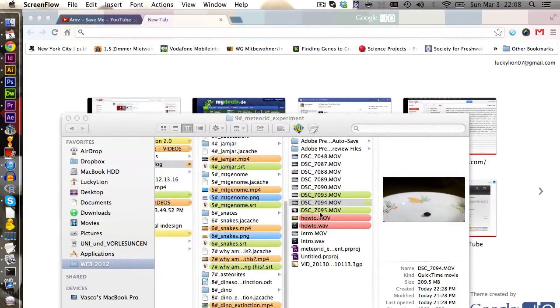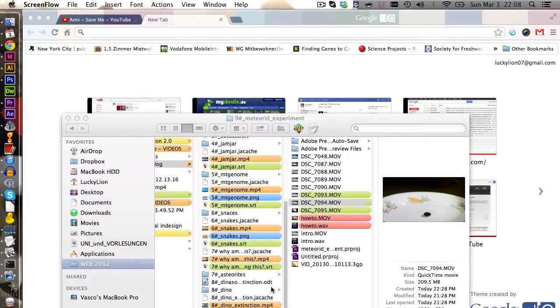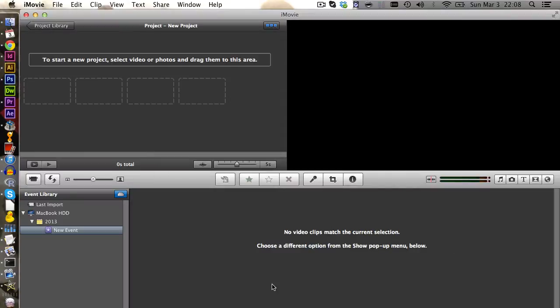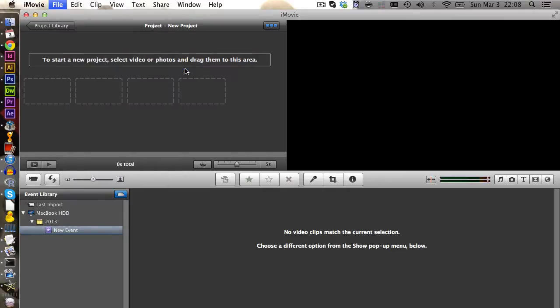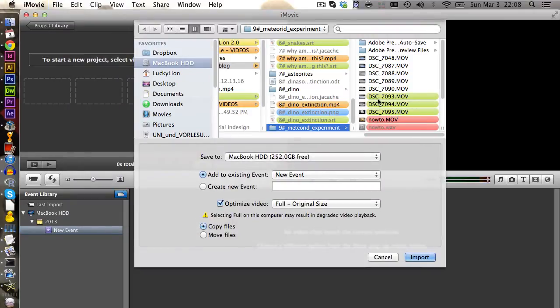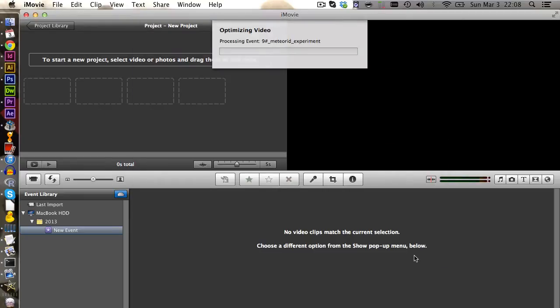Now we have imported our footage from the SD card and we can open it for example in iMovie. But this will also work the same way probably in Windows Movie Maker. In iMovie we have a new project and we need to import our footage. We go on import movies and we select one of those in here. Click on import and this will take some minutes.